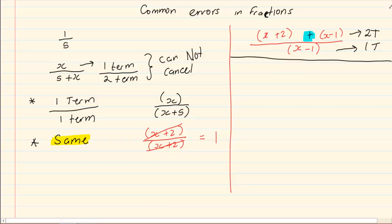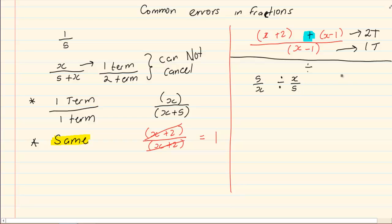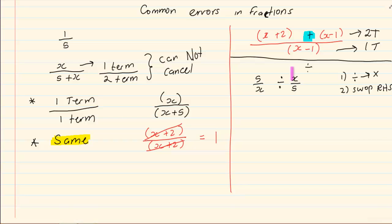The second error we find with fractions is when we have division. If you have division — for example, 5 over x divided by x over 5 — number one, you cannot cancel. So I cannot cancel that x with this x, and I cannot cancel the 5 on the top with the 5 at the bottom. The rule is you must change division to multiplication, and number two, you must always swap the right hand side. You look at the number on the right hand side of the division, and that is the one you swap. You do not swap the left hand side.